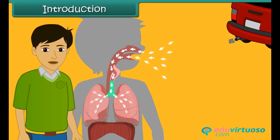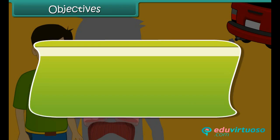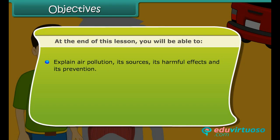In this lesson, we will study about the harmful changes taking place in our surroundings and their effects on our lives. At the end of this lesson, you will be able to explain air pollution, its sources, its harmful effects, and its prevention.